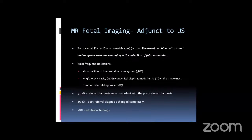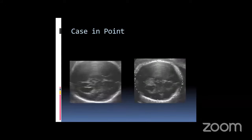Santos and colleagues in 2010 evaluated the combined use of ultrasound and MRI for detecting anomalies. They found CNS abnormalities in about 38% of cases and lung/thoracic abnormalities in about 42%. The referral diagnosis was concordant with the post-referral diagnosis in 42% of cases; in 29% the diagnosis changed completely; and in 28% additional findings were found on MRI — so together that represents a significant clinical impact.